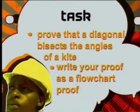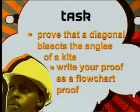For your task today, take your paragraph proof from the last task — the one about the angles being bisected by the diagonal — and use it to make a flowchart proof. Well, that's it for today's lesson. Until next time, keep investigating.